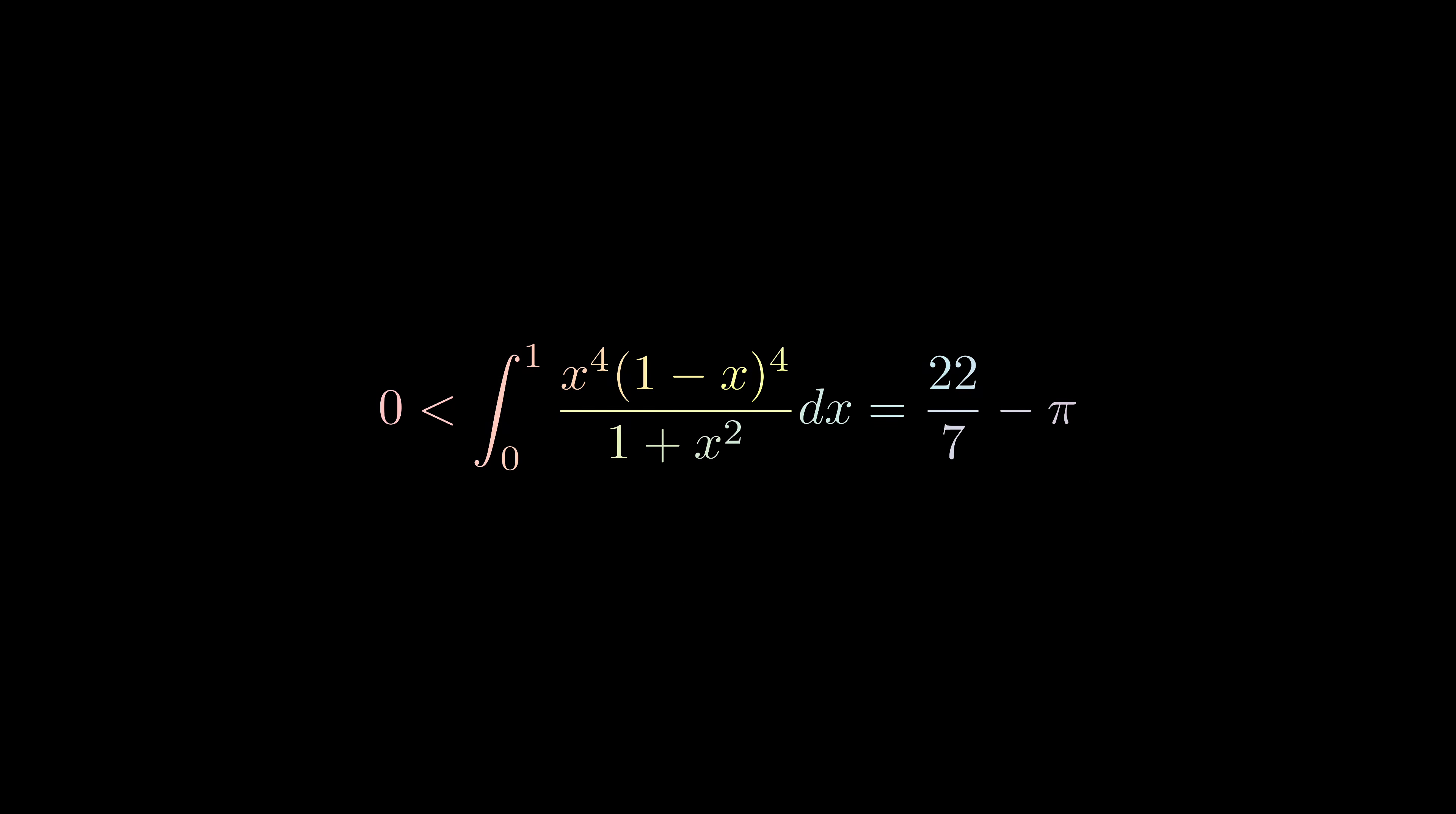But if you look at this expression, where does it come from? Is it a random expression that happens to work? Can we have better approximations of pi starting from it?